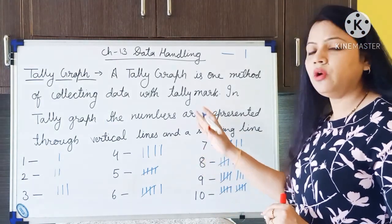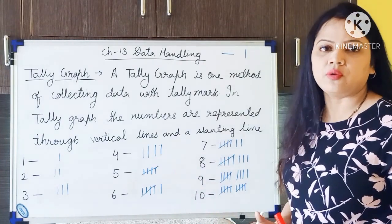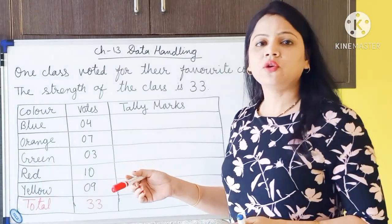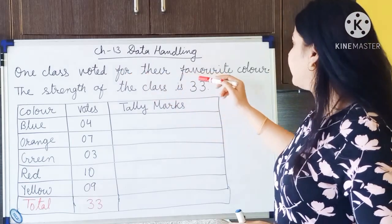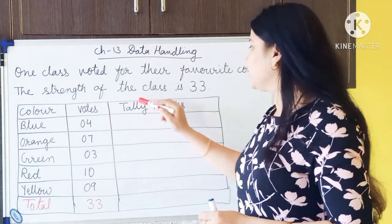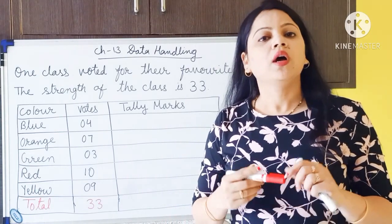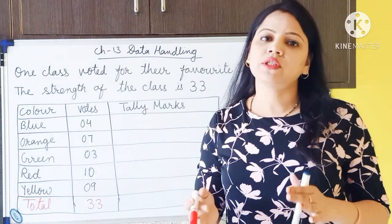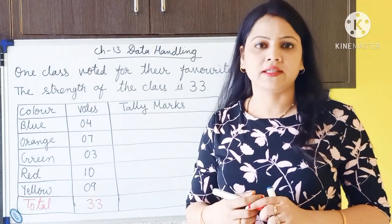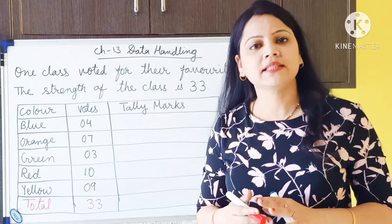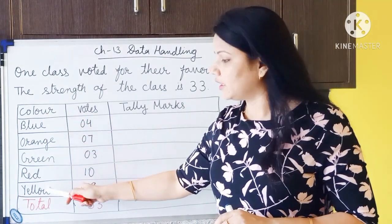So just pause this video and write this definition and examples in your maths notebook. Now here is the question: a class voted for their favorite color. The strength of the class is 33. So in the class we have taken a survey for their favorite colors.